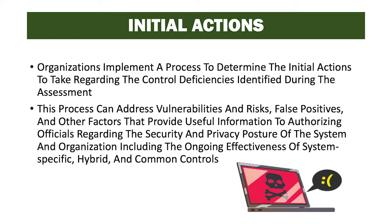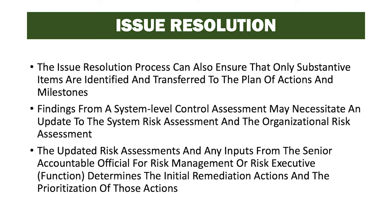Organizations implement a process to determine the initial actions to take regarding control deficiencies identified during the assessment. This process can address vulnerabilities and risk, false positives, and other factors that provide useful information to authorizing officials regarding the security and privacy posture of the system and organization, including the ongoing effectiveness of system-specific, hybrid, and common controls. The issue resolution process can also ensure that only substantive items are identified and transferred to the Plan of Action and Milestones. Findings from a system-level control assessment may necessitate an update to the system risk assessment and the organizational risk assessment, and the updated risk assessment determines the initial remediation actions and their prioritization.